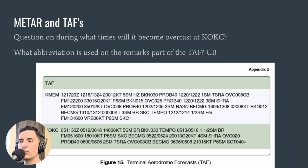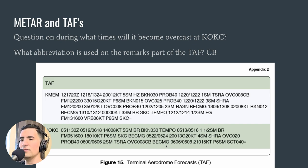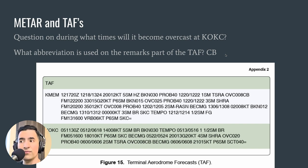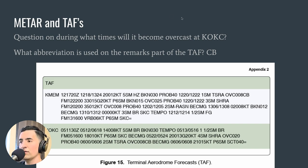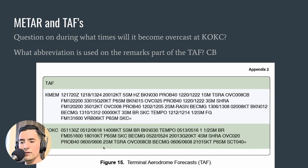There's a question asking during what times it will become overcast at KOKC — make sure you're looking at the correct TAF. There was also a question on what abbreviation is used in the remarks section of a TAF. I hadn't studied the remarks section much, so review that. I found the answer by looking at figure 15 and spotting the abbreviation CB appearing in the answer choices — those are cumulonimbus clouds. The answer was CB for cumulonimbus clouds.